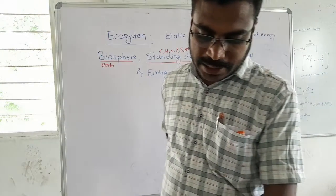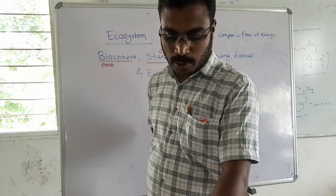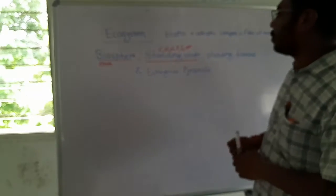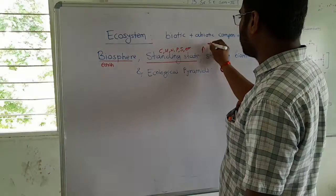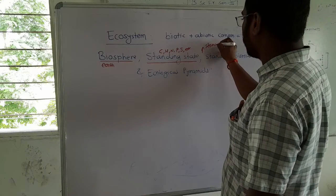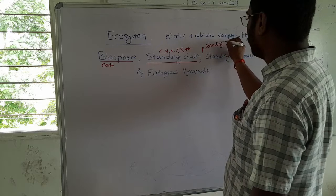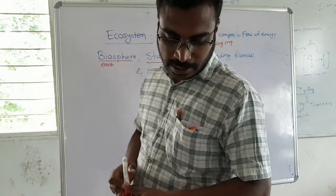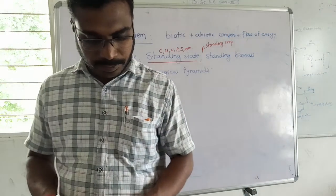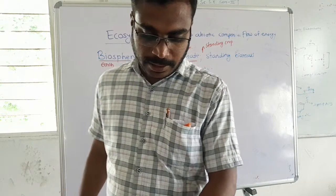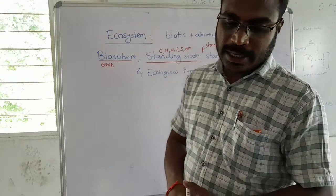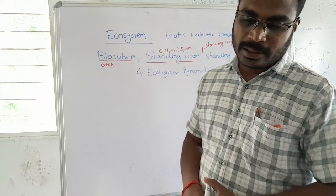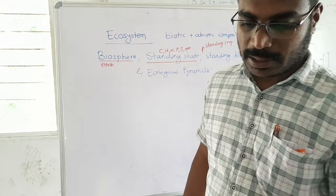The amount of living material present in a component population at any given time is known as standing crop. It includes the amount of biomass in a living population. When the standing crop is expressed in terms of weight of the ecological system, it is called standing biomass.